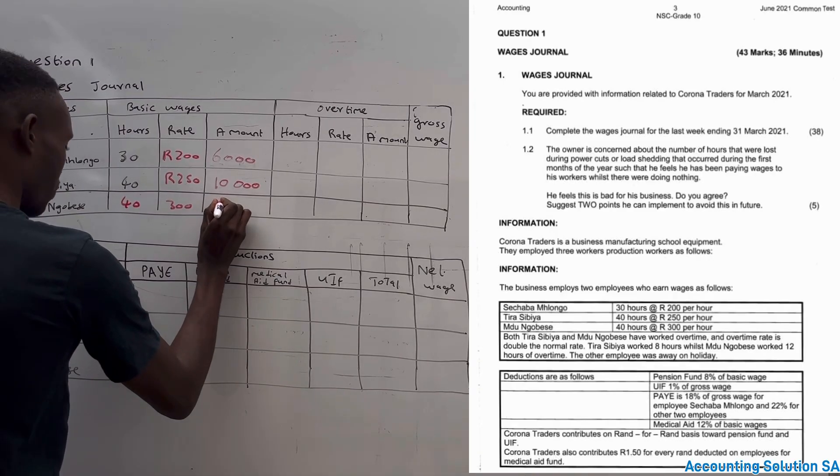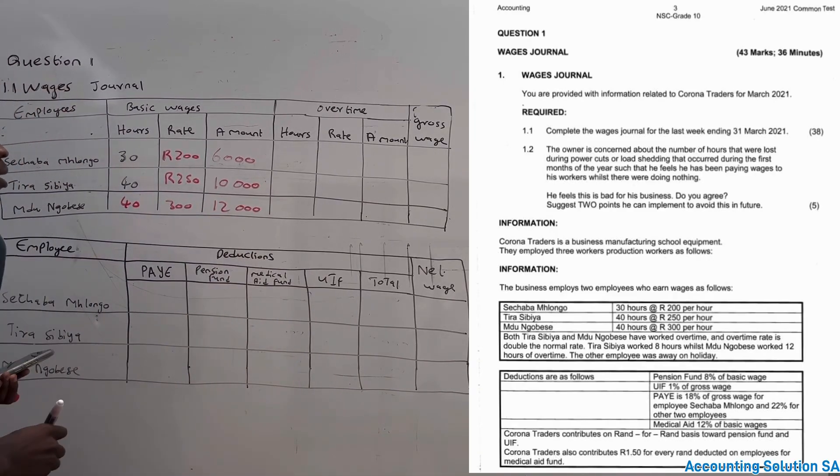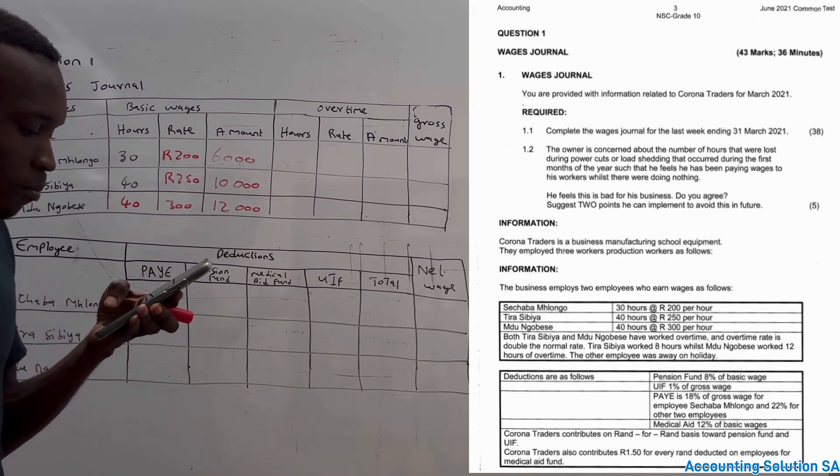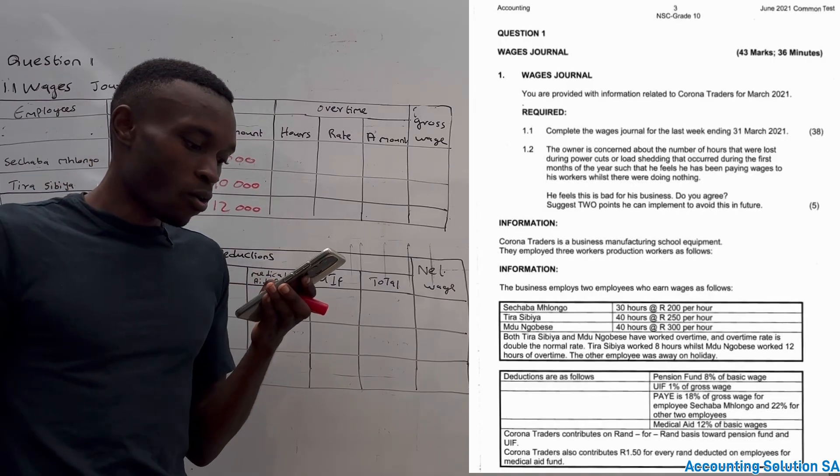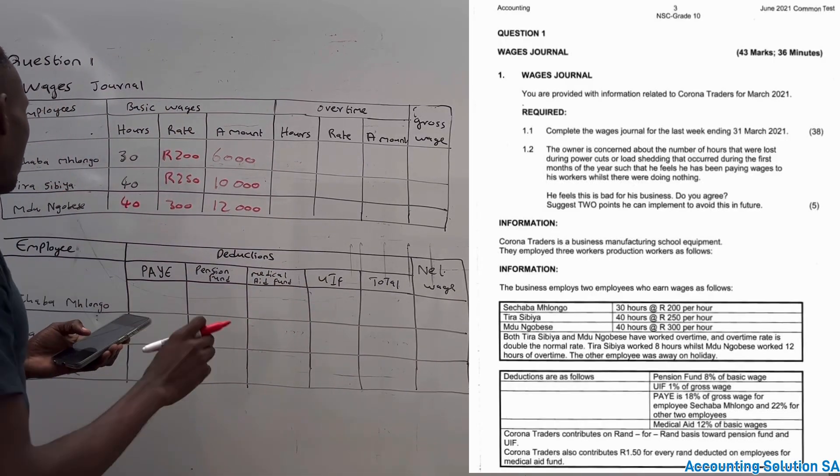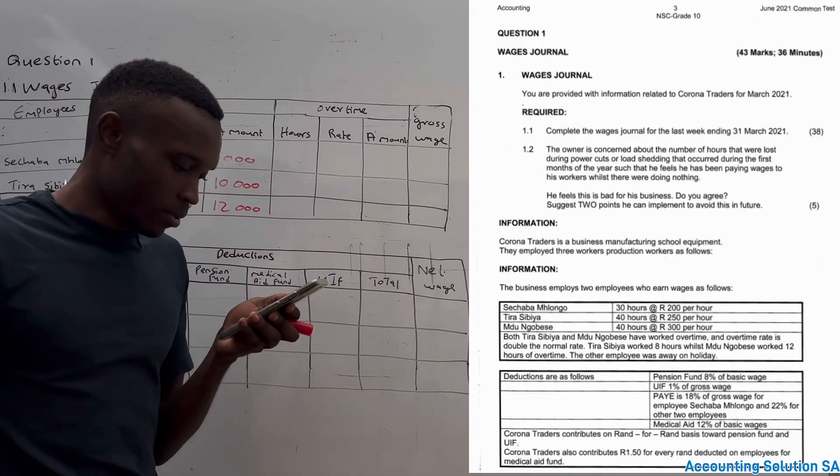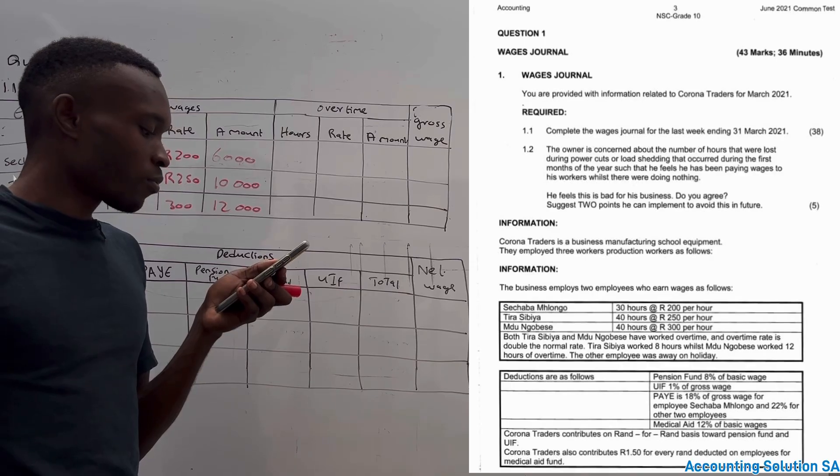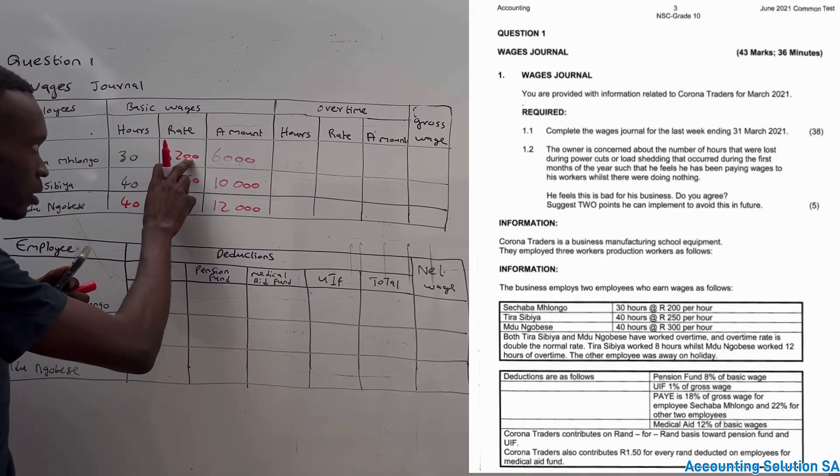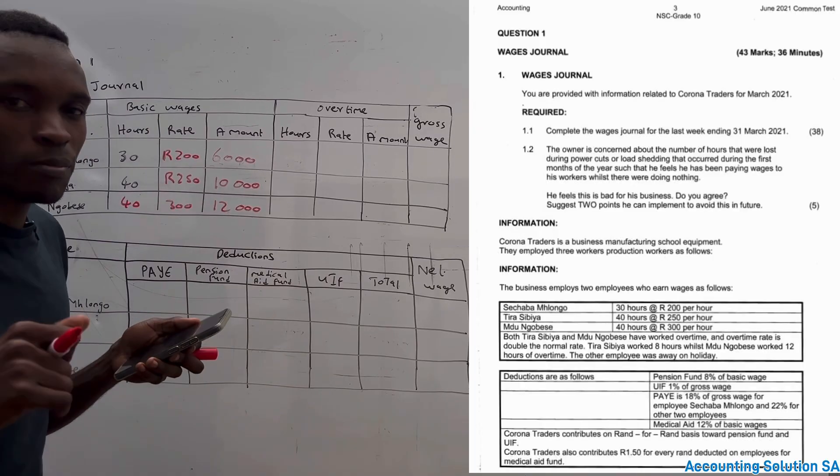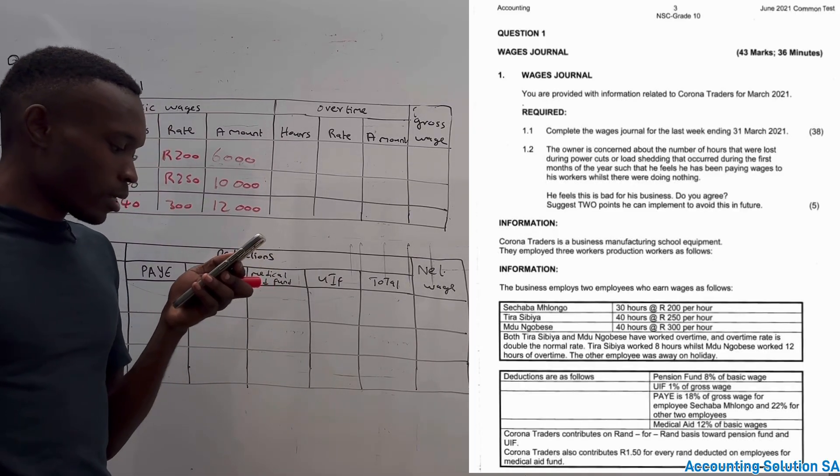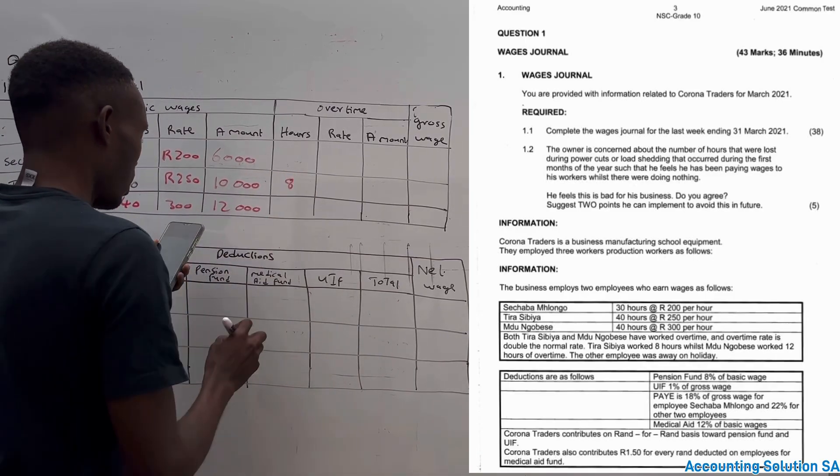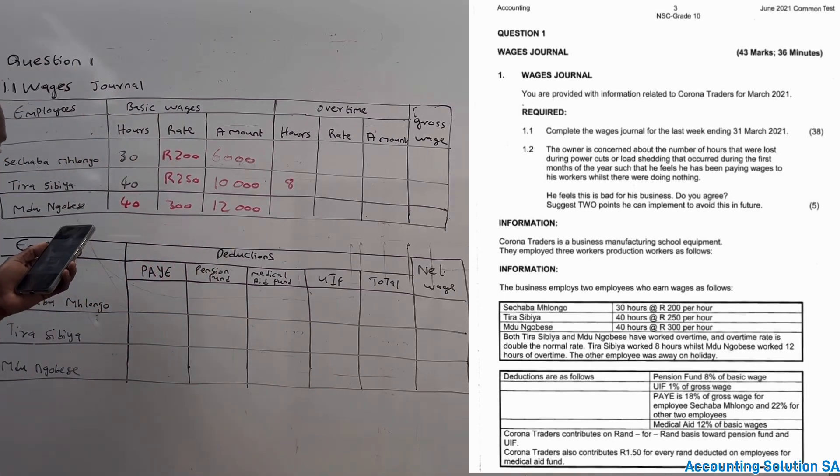Now let's go and read overtime information. Both Tira and Severe Mdudu always have worked overtime. Severe and Mdudu are the ones that worked overtime. And they said an overtime rate is double of the normal rate. In other words, if he earns 200, he's going to earn 400 because it must double. Then they said Tira worked 8 hours and Mdudu worked 12 hours.